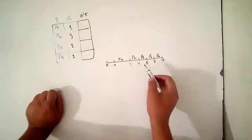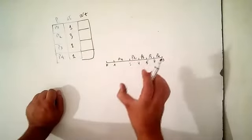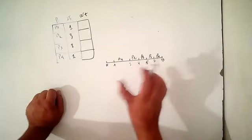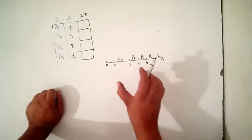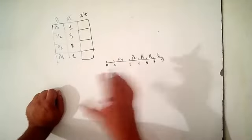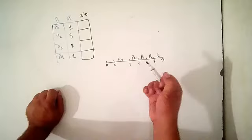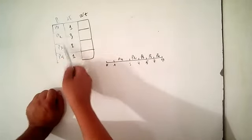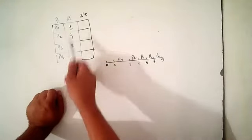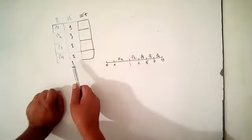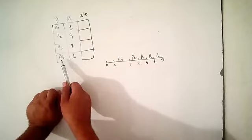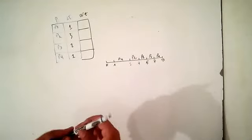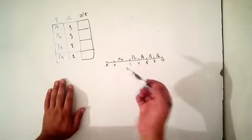Hello again. In this video I will show you how to calculate the average waiting time of a scheduling system. Here I have four processes: P1, P2, P3, and P4, each with an arrival time. Let's get started and calculate the waiting time of each process.